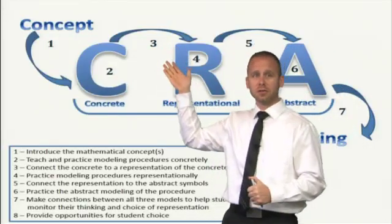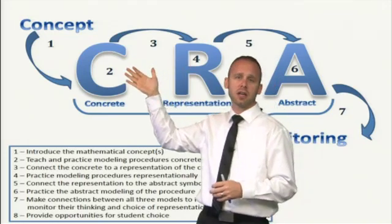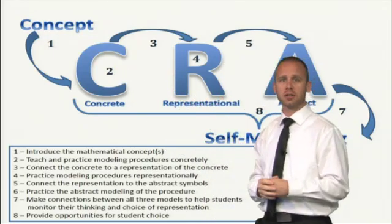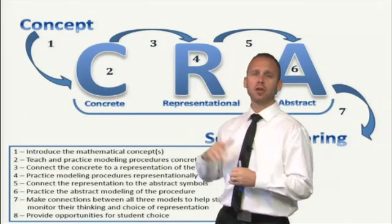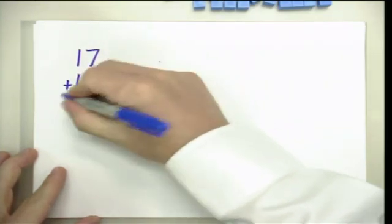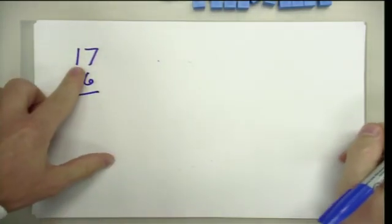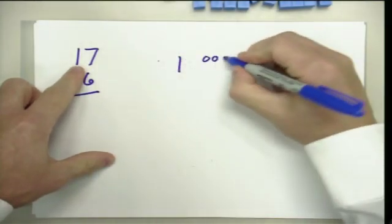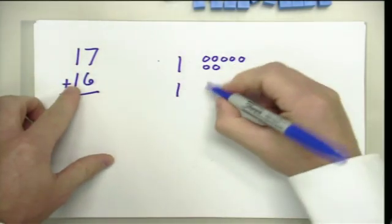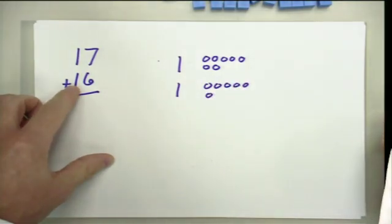Once you've made that connection for students, the important thing is that the thinking is not going to change — what changes is they're no longer going to use place value blocks; they're going to be comfortable working just with representations. So let's go back to our addition problem and look at that same problem using the pictures we just created. For 17 plus 16: I model 17 as 1 ten and 1, 2, 3, 4, 5, 6, 7 ones, and 16 as 1 ten and 1, 2, 3, 4, 5, 6 ones.